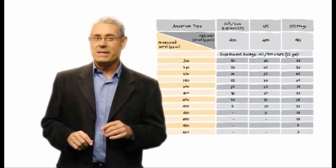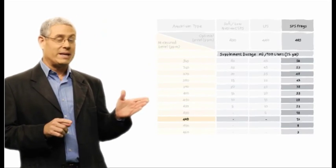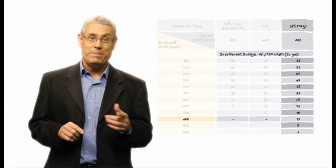On the back of our packaging, we provide dosing charts to simplify use of our products. Let's take our calcium supplement as an example. The chart will show the recommended value of calcium for a given aquarium. So, if we have an SPS tank set for accelerated growth and our test measures a current level of say 440 ppm,